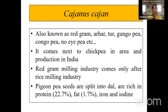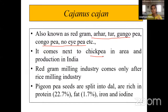These pulses belong to the Leguminosae family since they fix atmospheric nitrogen. The botanical name of pigeon pea or red gram is Cajanus cajan. It is also called red gram, arhar, tur, gungo pea, congo pea. These names can be asked in exams. Pigeon pea is next to chickpea in area and production in our country — chickpea or Bengal gram stands first, then pigeon pea.